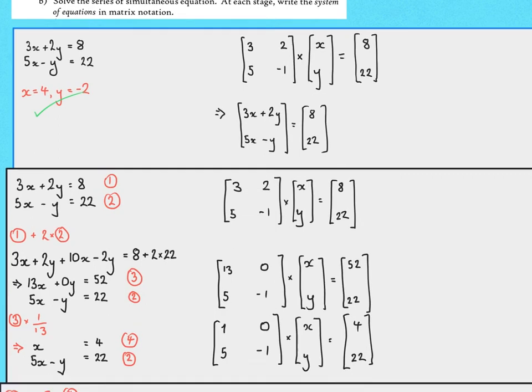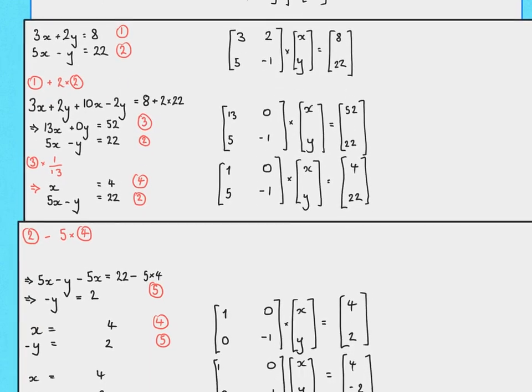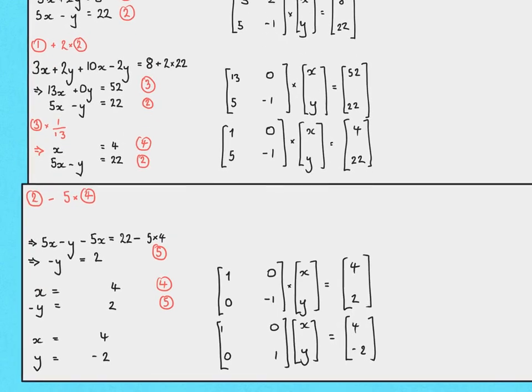Throughout, all we've been doing is adding and subtracting multiples of rows on both the left-hand and right-hand side of our matrix. Whenever we're solving simultaneous equations this way, we can do exactly the same operations with our matrices.